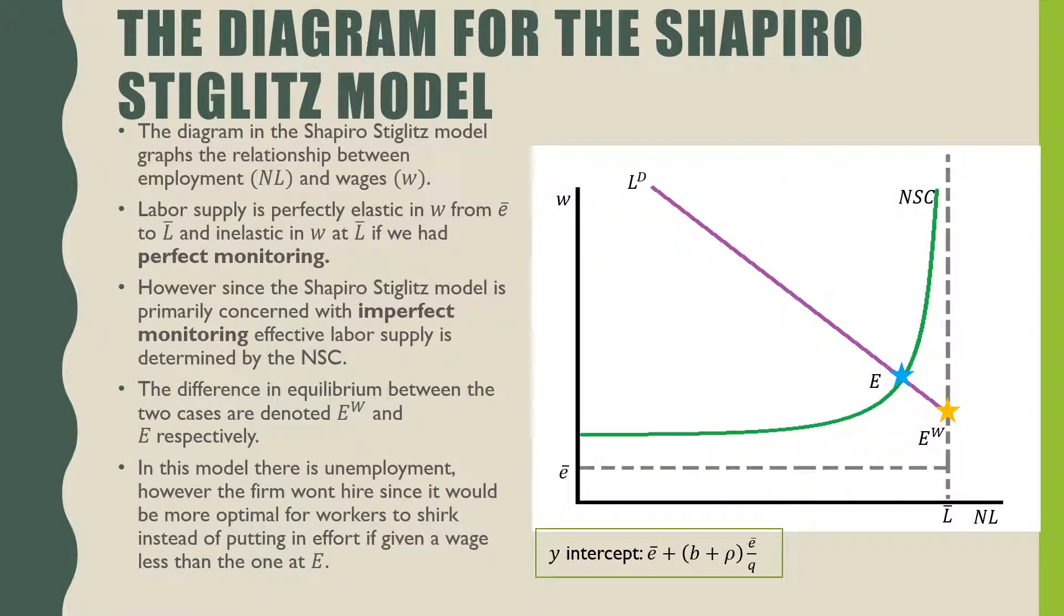This is the graphical representation of the Shapiro Stiglitz model where NL is the number of firms times the labor force L and wages is W. Labor supply is perfectly inelastic in W from E bar to L bar. If we had perfect monitoring, the firm is able to identify who the shirkers are and get rid of them right away.